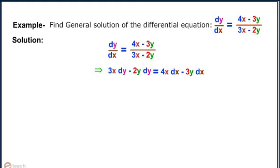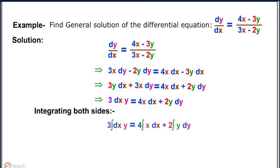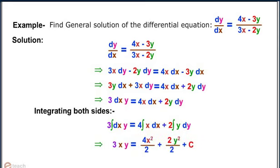Cross multiplying: (3x − 2y) dy = (4x − 3y) dx. Therefore, 3y dx + 3x dy = 4x dx + 2y dy. Therefore, 3 d(xy) = 4x dx + 2y dy. Integrating both sides: 3xy = 4x²/2 + y² + c, i.e., 3xy = 2x² + y² + c.